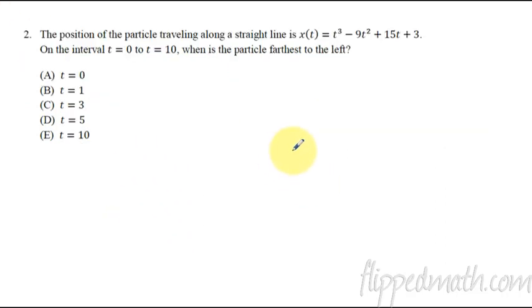For the second problem, this is where Mr. Brust is a little bit mean for putting this in unit three because really, this is stuff we are going to cover in units five and six. Let me show you how you do this. We're asking when is the particle farthest to the left? Here's usually how I read these problems. The position of the particle traveling along a straight line is x of t equals blah, blah, blah. I just totally ignore this. I don't care about that part yet. This is position, so that's important, this x of t is position, and I want to know when is it farthest to the left.